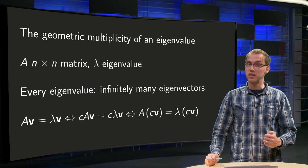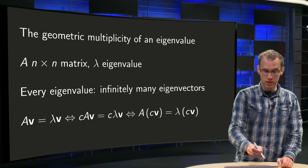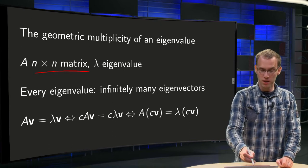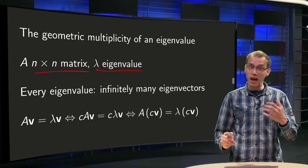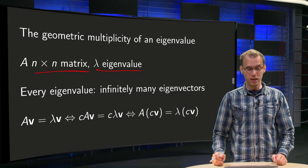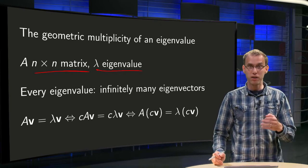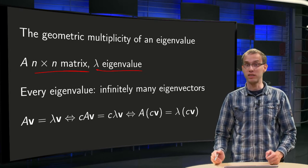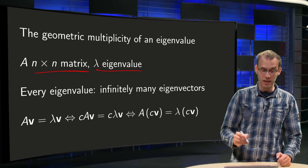Suppose A is a square n-by-n matrix and lambda is an eigenvalue — every eigenvalue lambda has infinitely many eigenvectors. Why is that?